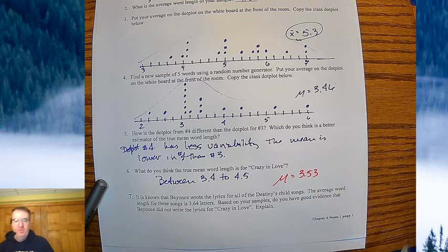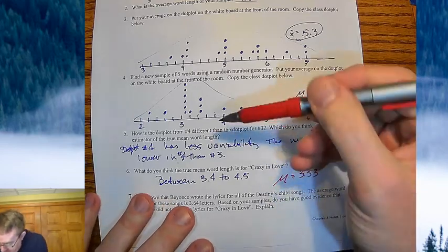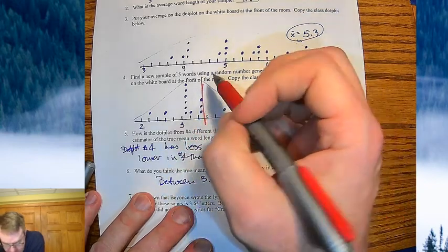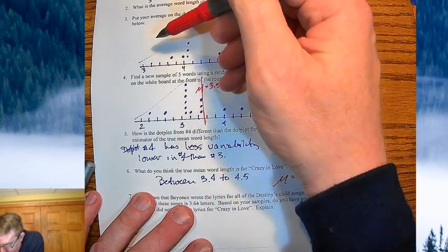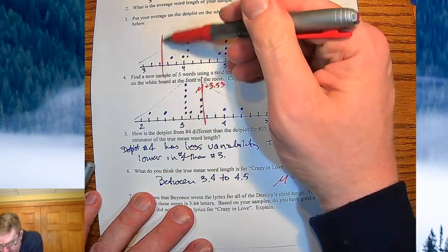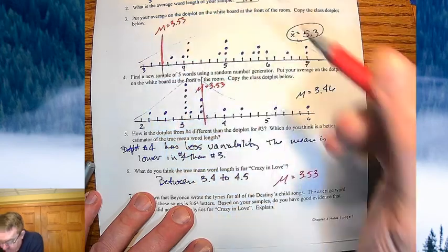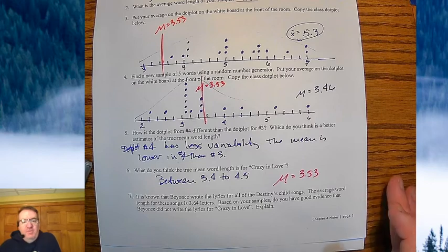We went through and actually did it, and it turns out our mean for all 297 words is actually 3.53 letters per word. And so that would be right, if we're up here, right there. Down over here, it's here. And then you kind of drop the bombshell.